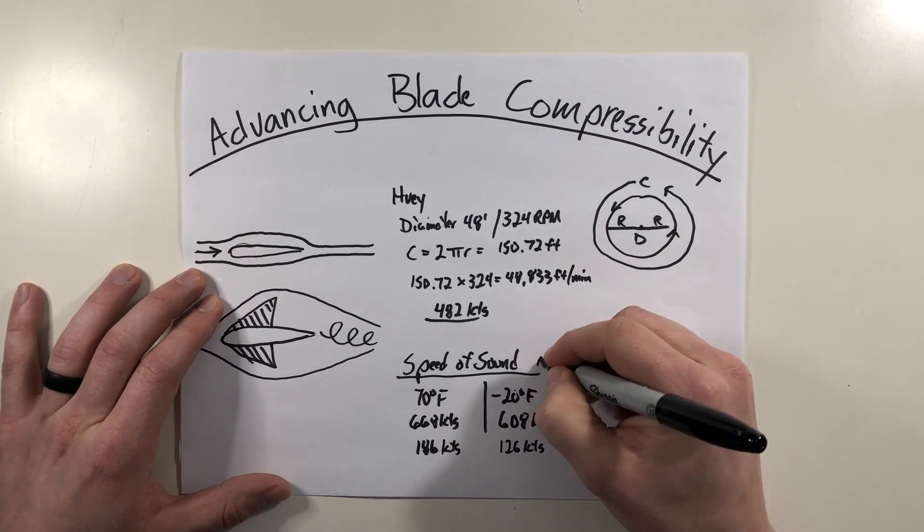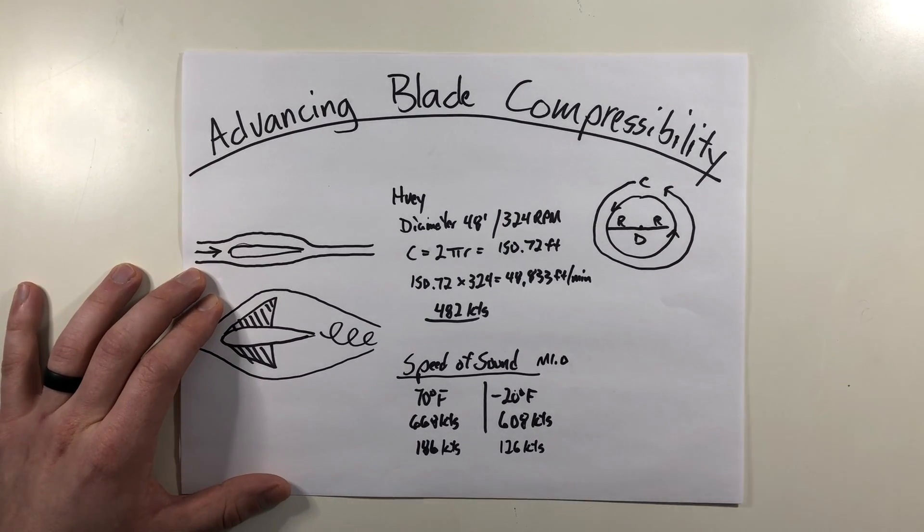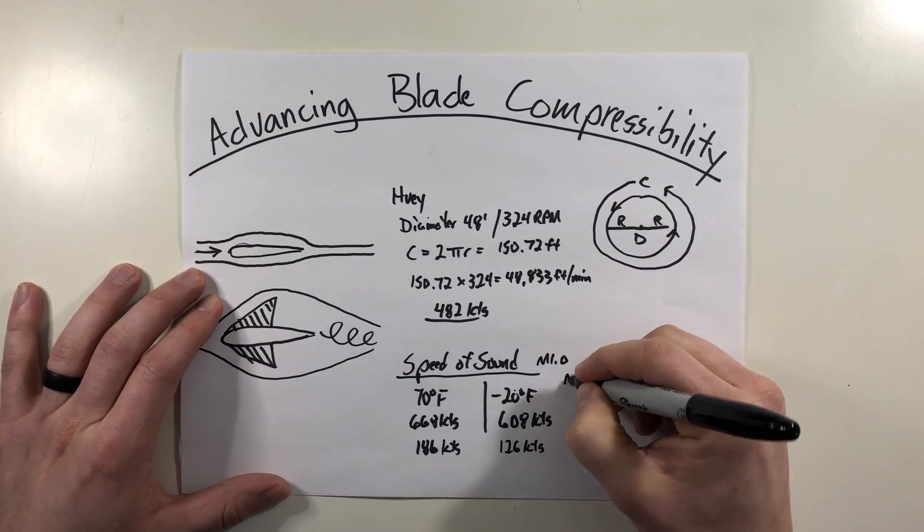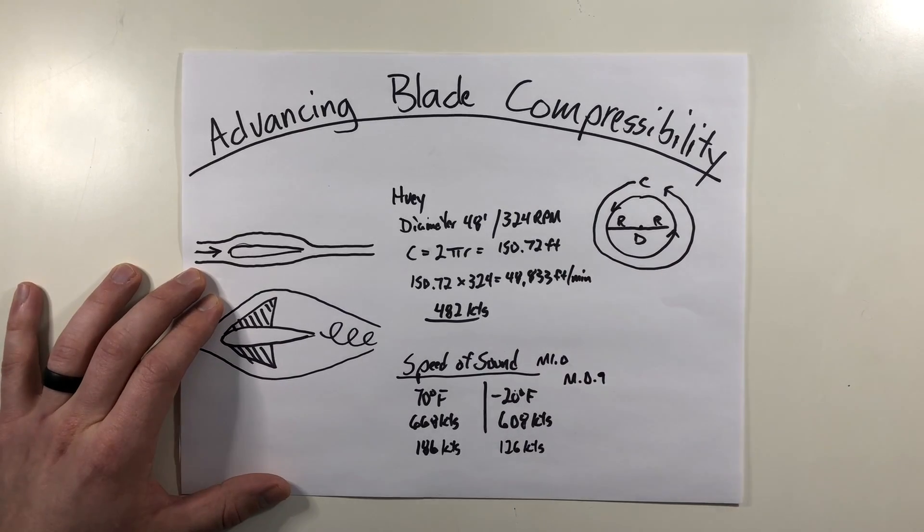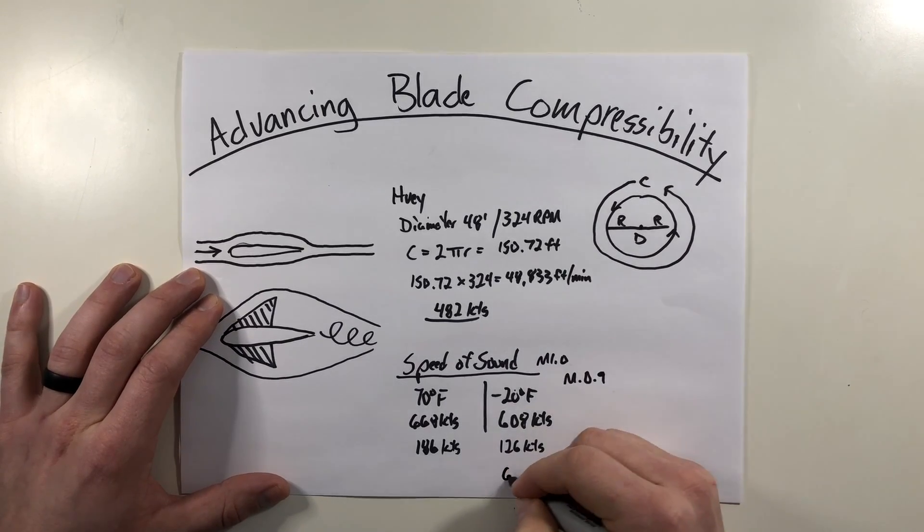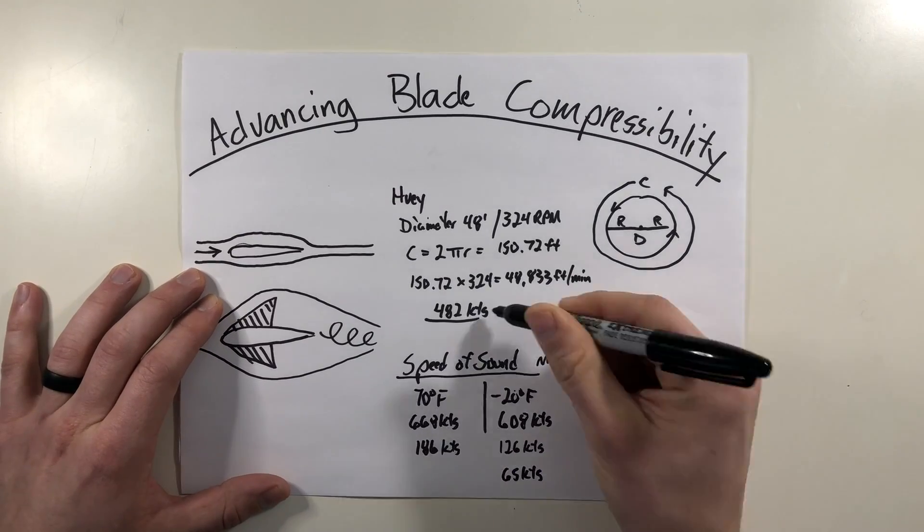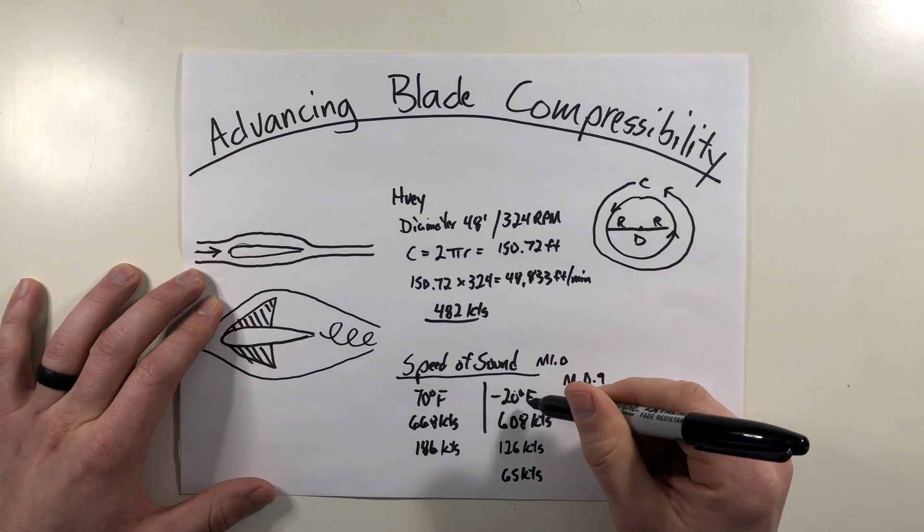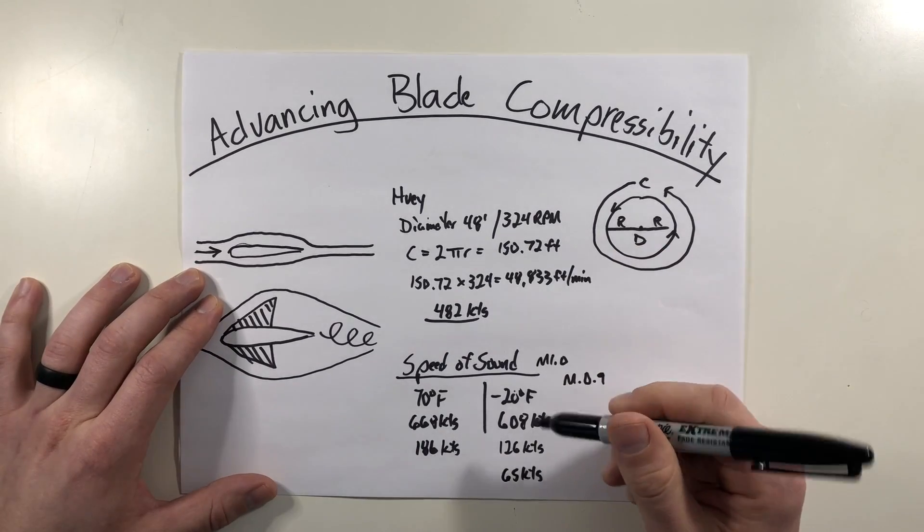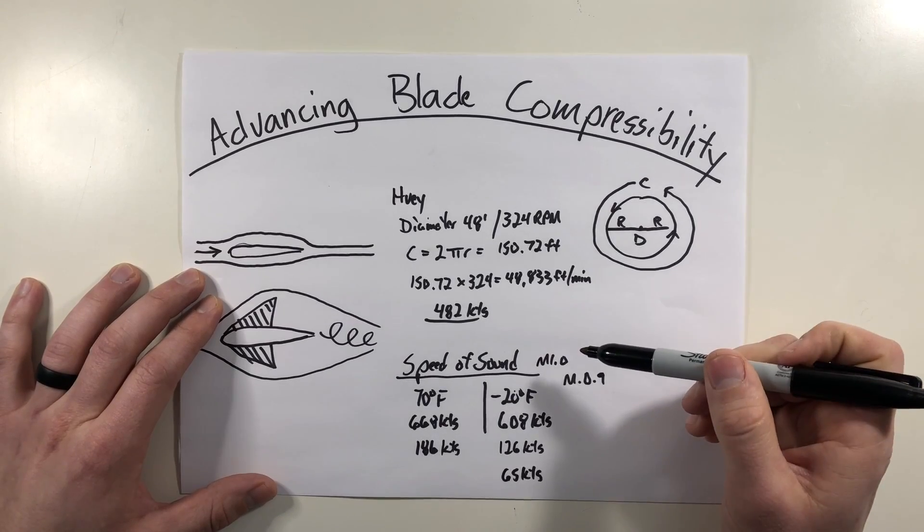So as the speed of sound is usually depicted as Mach 1.0, if you're taking 10% off that, you can potentially get into compressibility effects at a Mach 0.9. And this equates to roughly 65 knots at minus 20 degrees with this rotor system at this speed. So potentially at 65 knots at minus 20 degrees Fahrenheit for this rotor system, I could potentially start to see the effects of advancing blade compressibility.